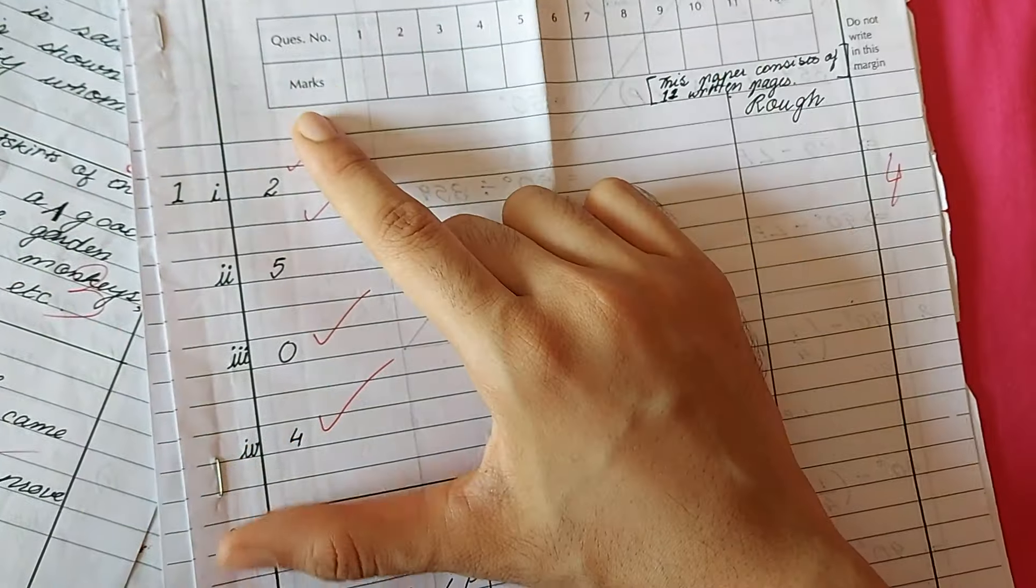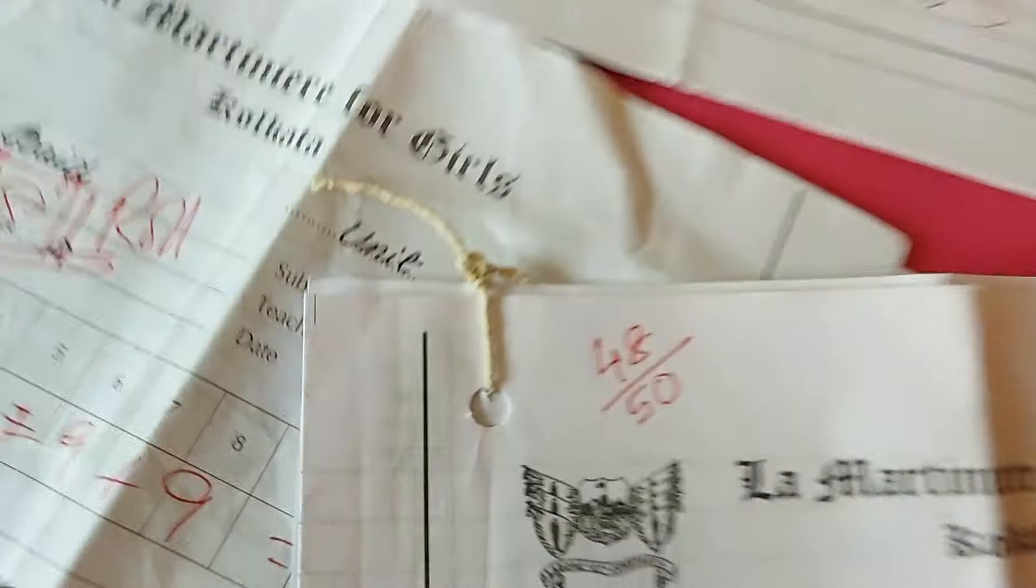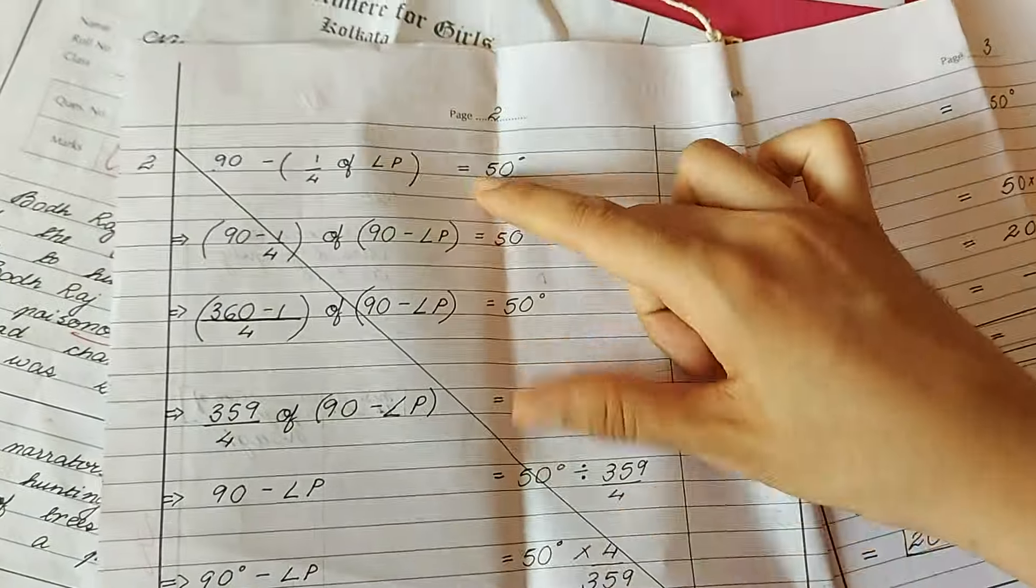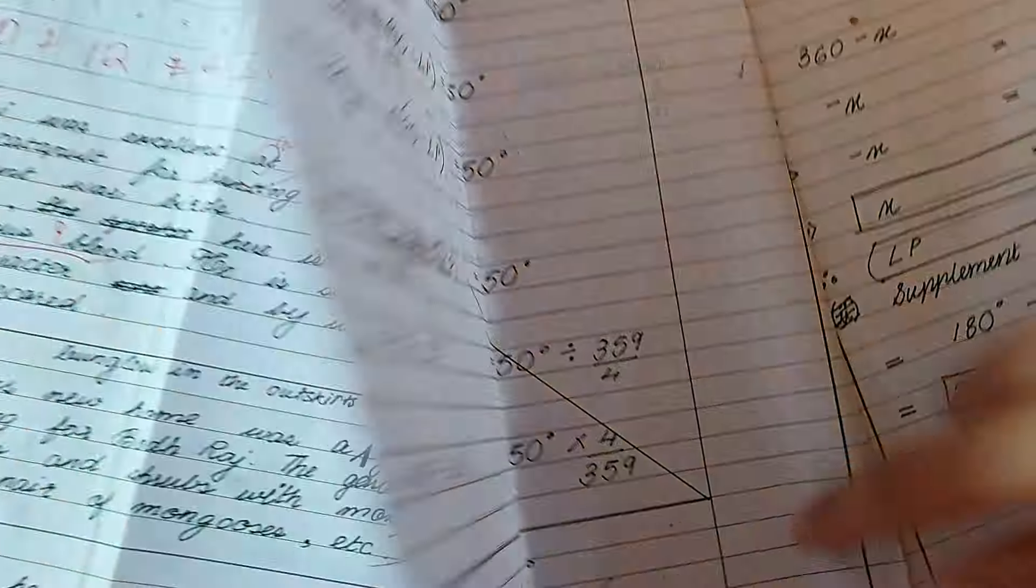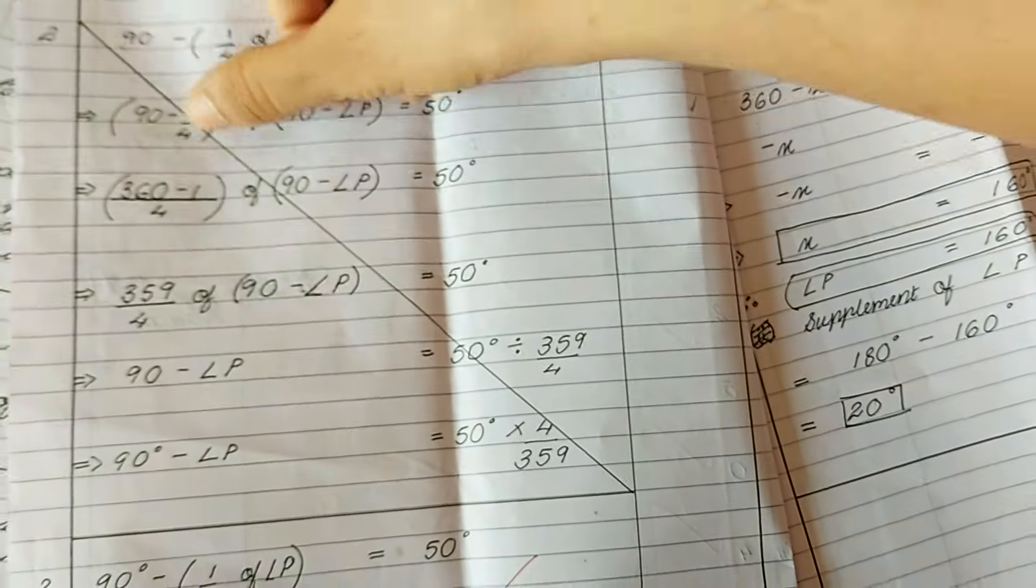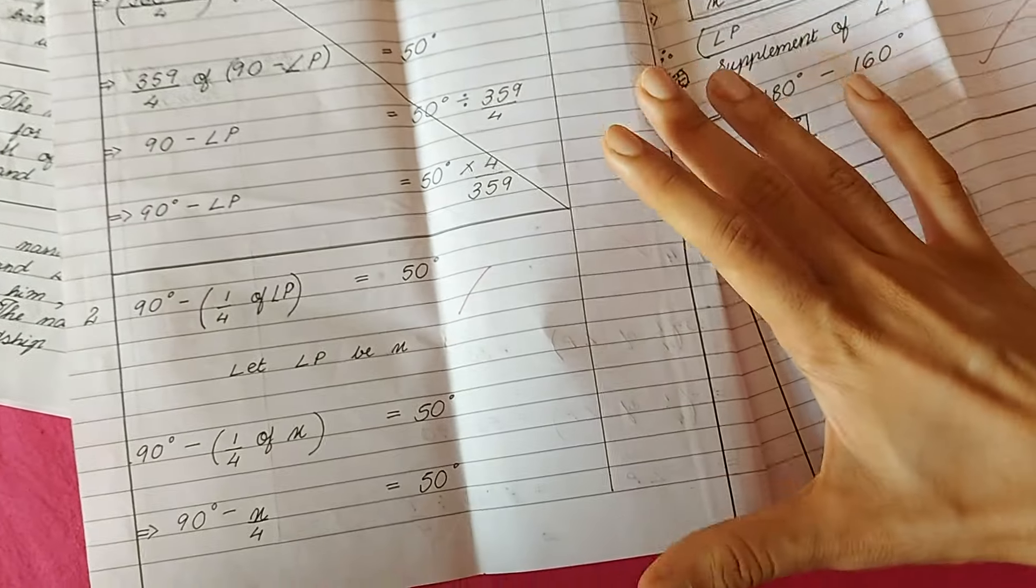For maths, there are some questions where you're supposed to write the answer directly. Here are my marks if you want to know. If you make any mistake, for example I made a mistake over here, just take a pencil and strike through it like this, not scribble at all because it just does not look nice. Then I'll do the question again.